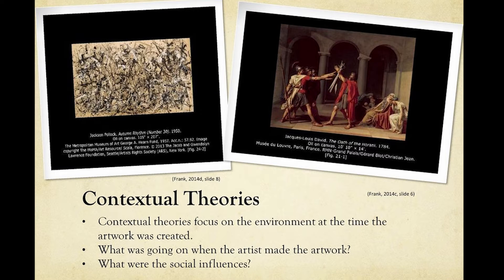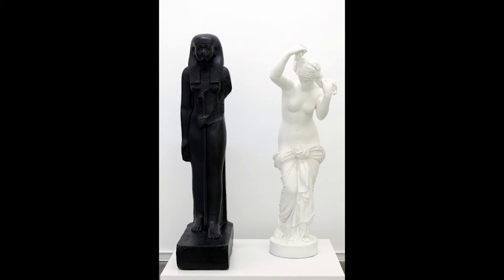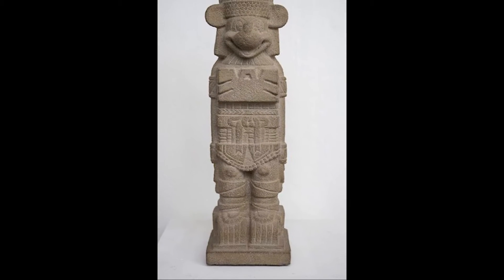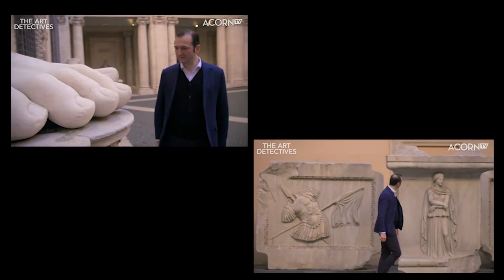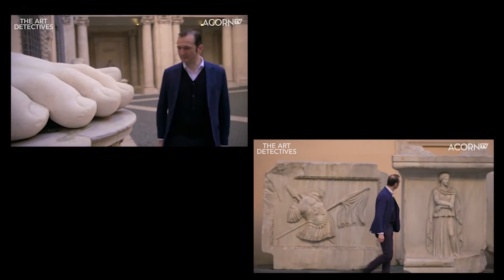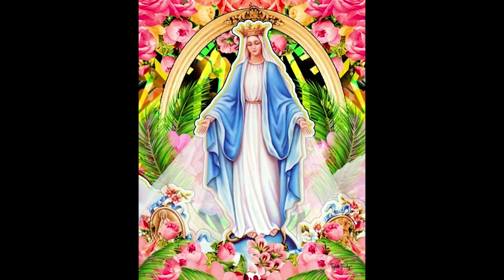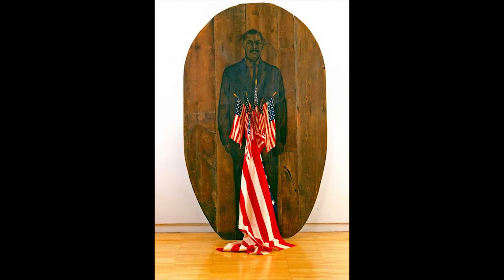Contextual theory can be applied to artworks where the story, meaning, or context are very important. Contextual artworks are not just visual or expressive — it's important to consider who made it, the time or place they were made in, as well as why the artwork was made. Some examples are religious or political art, or works that were very influenced by their culture.